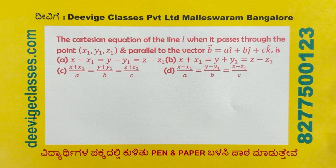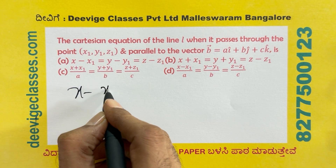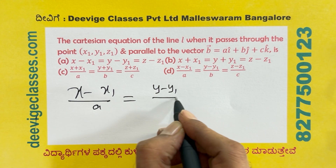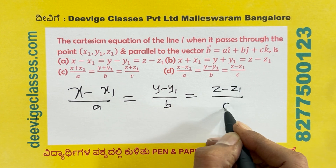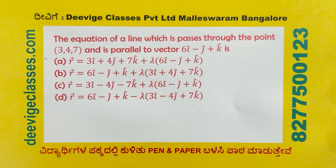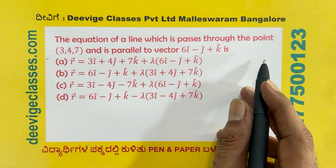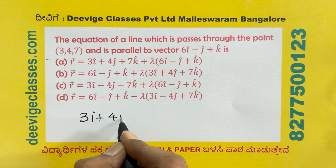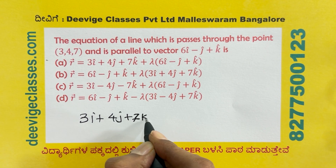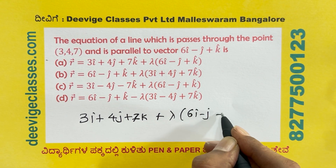The Cartesian equation of the line L when it passes through the point (x1, y1, z1) and is parallel to vector b-bar equals ai-cap plus bj-cap plus ck-cap is: x minus x1 over a equals y minus y1 over b equals z minus z1 over c. For the line through (3, 4, 7) parallel to 6i-cap minus j-cap plus k-cap: R = (3i plus 4j plus 7k) plus lambda (6i minus j plus k).